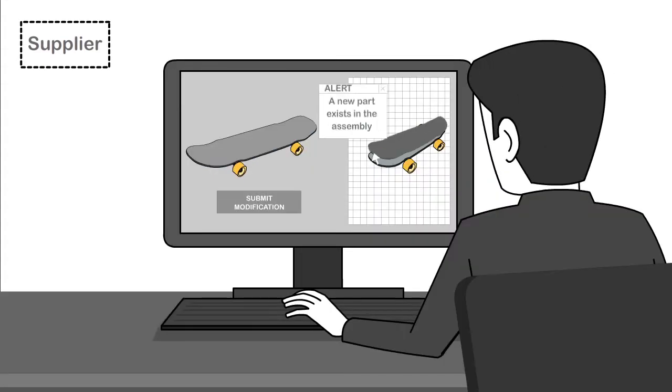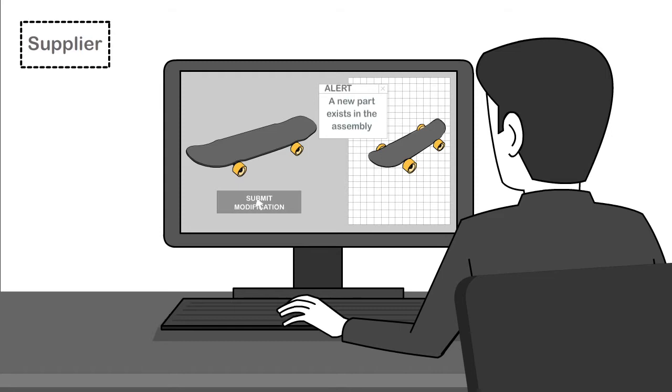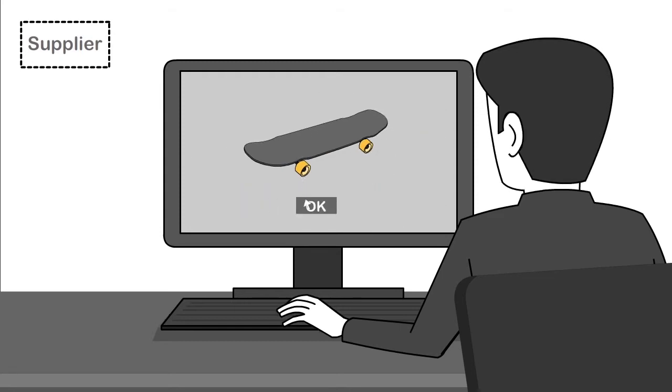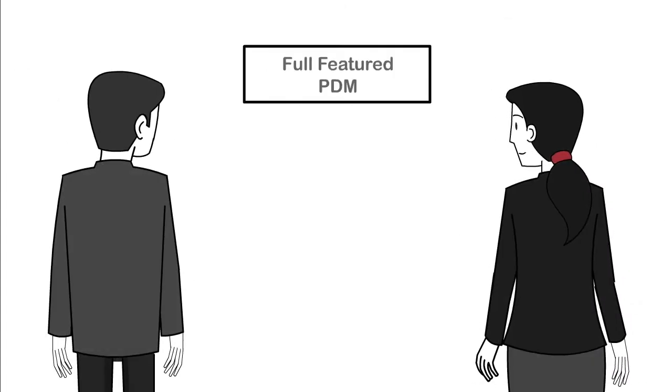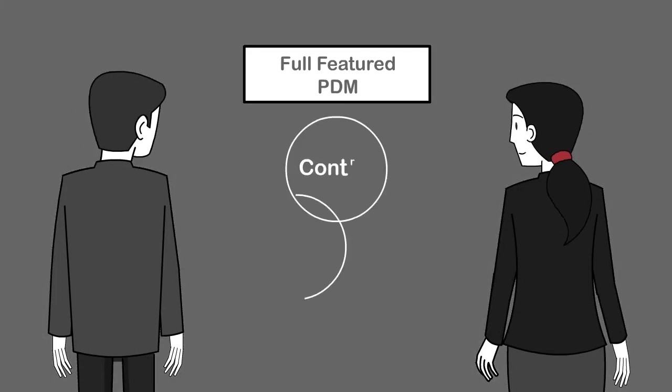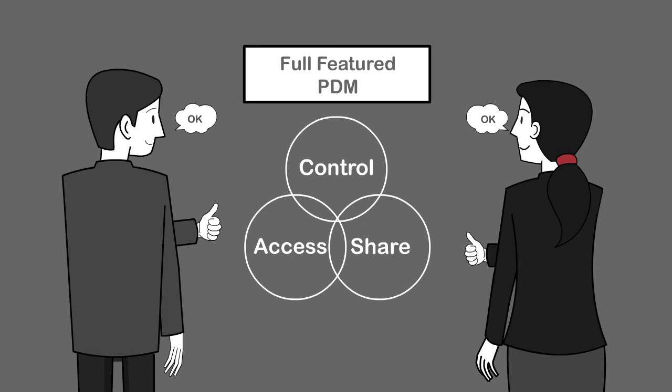And it helps designers coordinate activities across departments and the supply chain, even if they use different CAD tools. Full-featured PDM provides the capabilities manufacturers need to control, access, and share product data in a way that's accessible to smaller companies.